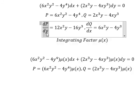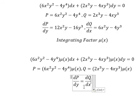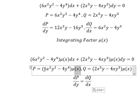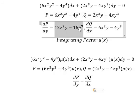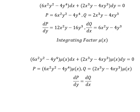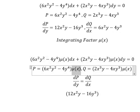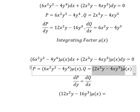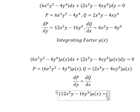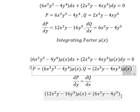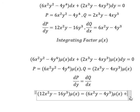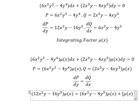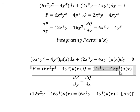We want dP over dy to equal dQ over dx. Since this one contains only the variable x, when we do the first derivative with respect to y we get this. From here we multiply by μ(s). For dQ over dx, we do the first derivative of this term first, multiply by μ(s), then later do the first derivative of μ(s) and multiply — applying the product rule of derivative.